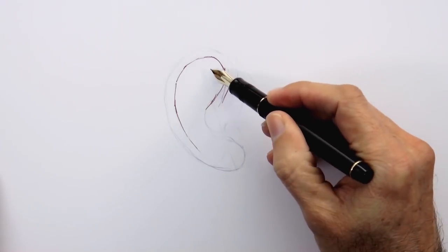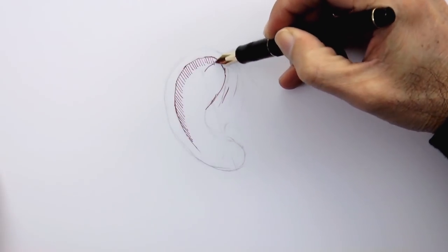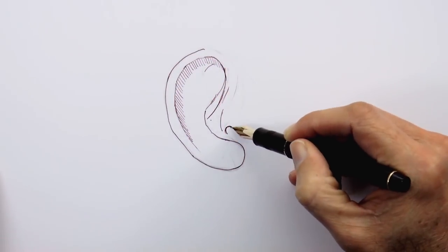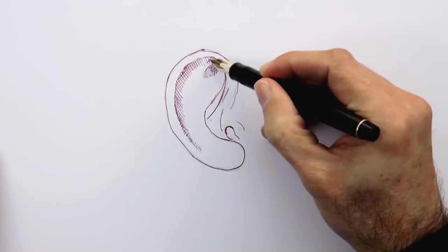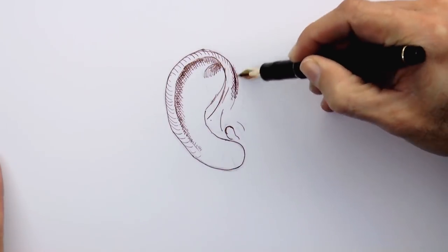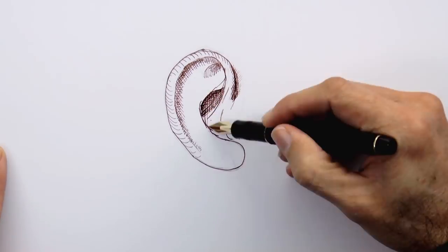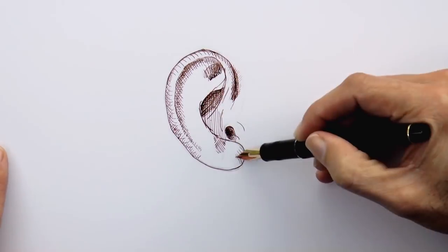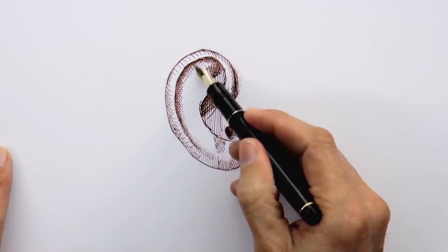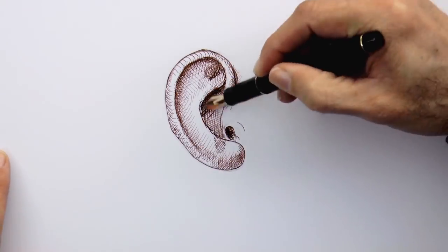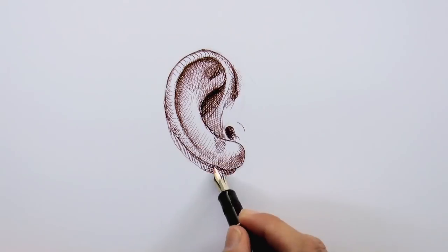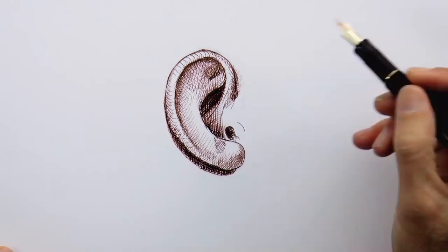We can start shading with some hatching. We add the thickness of the helix and the lobule at the bottom. I like drawing ears because they have many different planes which are fun to make and to shade. The darkest spot should be the orifice toward the bottom. And let's do the shadow of the ear itself underneath.